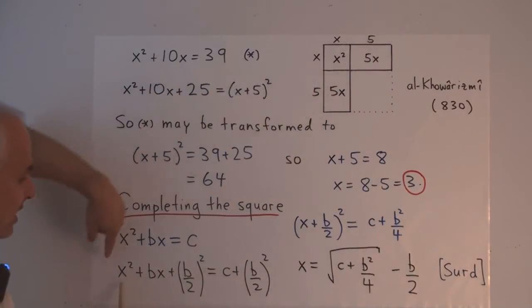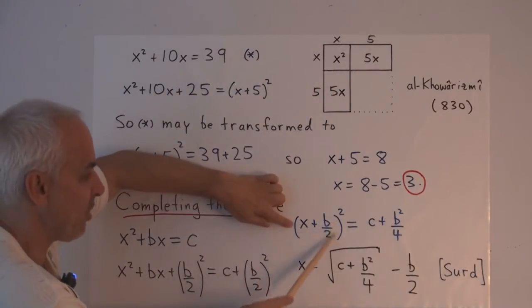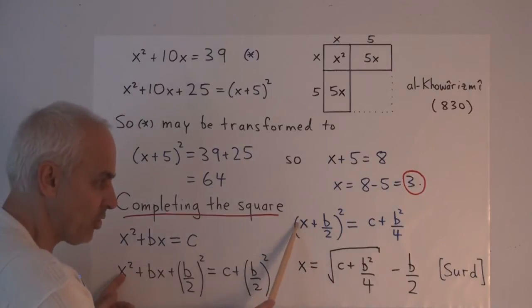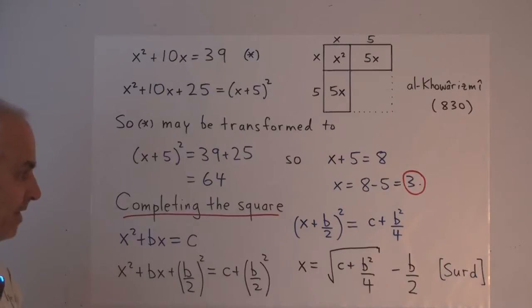And now what's on the left-hand side is a perfect square, just like this here is a perfect square. It is equal to x plus b over 2 all squared. So let's check that. If we square this, we get x squared plus 2 times the product, 2 times x times b over 2, that's exactly bx, and b over 2 squared—well, there it is right there.